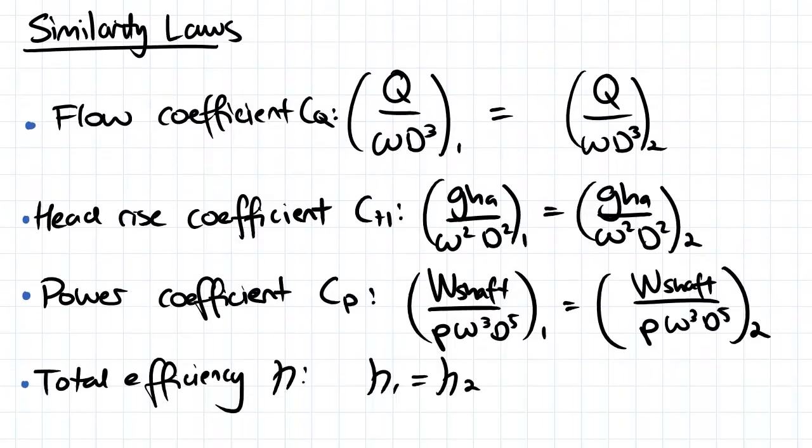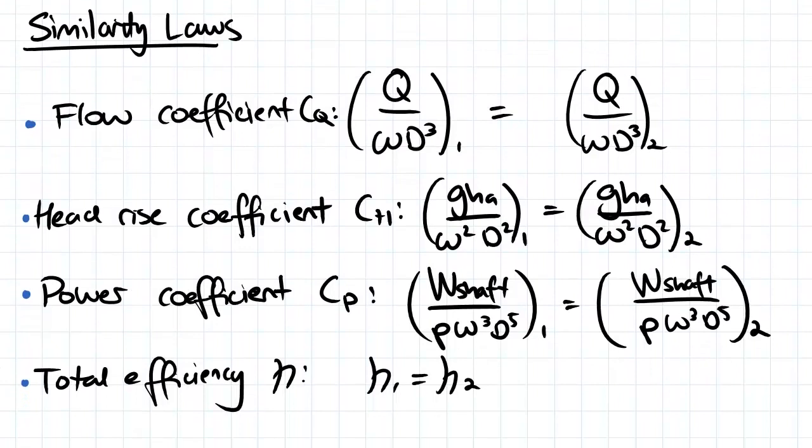So our similarity laws are here. Essentially these are dimensionless coefficients that we can use to compare what we might call a model and what we might call a prototype. So when we've got something constant between the two of these, we can compare how the other two variables might change.